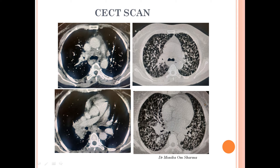This was followed by CECT chest. On the mediastinal window, at the level of the aortopulmonary window, we can see some nodes which are enlarged with a hypodense center and peripheral enhancement — these are necrotic lymph nodes in the right pretracheal and paratracheal distribution. In another image we can see another enlarged lymph node in the subcarinal distribution.